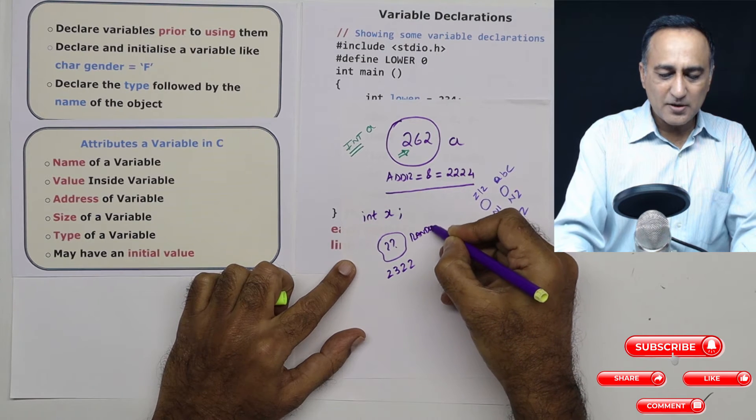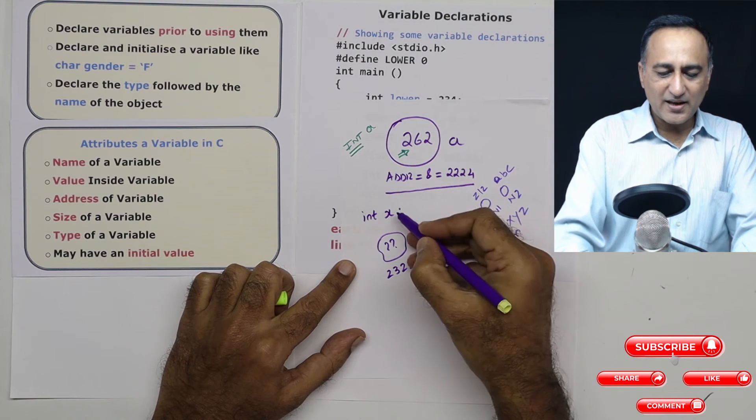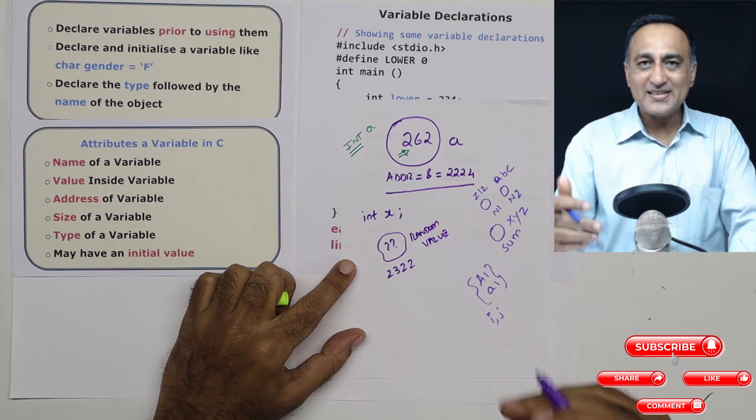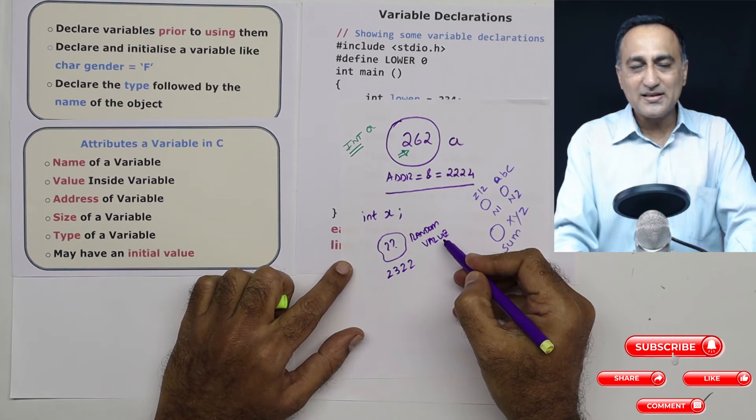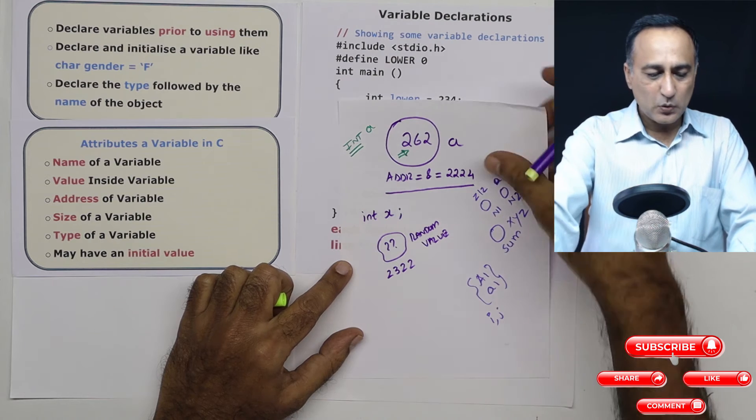random or garbage values. So if you just declare without giving initial value, it will contain certain unknown random combination of zeros and ones. That's why we call it as a random or a garbage value.